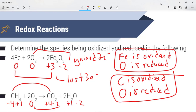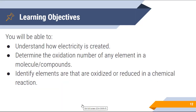Pretty straightforward — practice makes perfect with this, so we'll give you some practice problems a little bit later on. Hope you learned everything you needed to from the video. You should understand a little bit about how electricity is created, be able to determine oxidation numbers for any element in a molecular compound, and identify elements that are oxidized or reduced in a chemical reaction. Thanks for watching — have a great day, make sure you like and subscribe. See you guys later, bye bye.